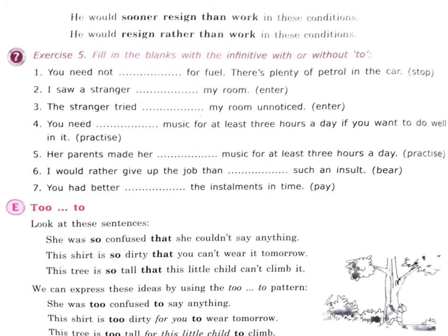Look at these sentences. 'She was so confused that she couldn't say anything.' This can be converted with the help of the 'too...to' pattern. 'This shirt is so dirty that you can't wear it tomorrow.' 'This tree is so tall that this little child can't climb it.' So we express these ideas by using the 'too...to' pattern. She was too confused to say anything.